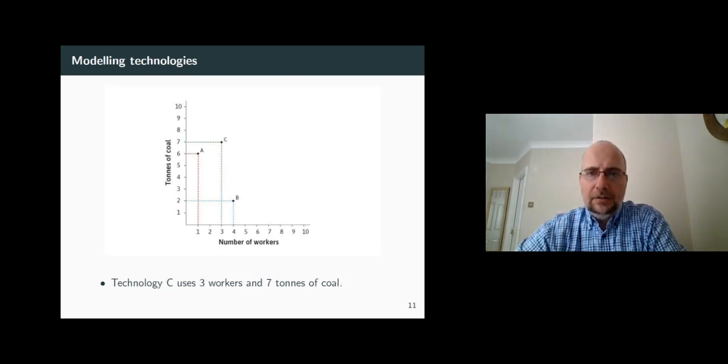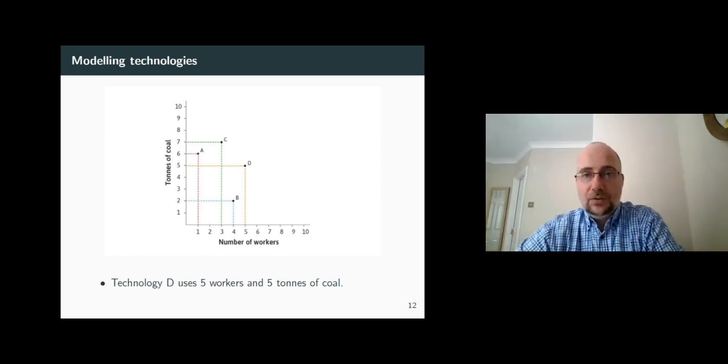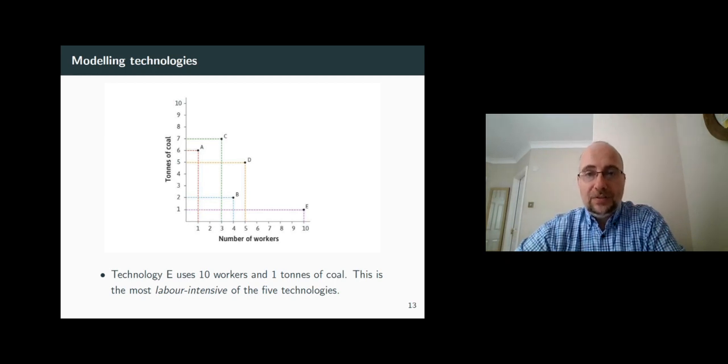You can, of course, combine your inputs in a different way and use, say, three workers and seven tons of coal, or five workers and five tons of coal, or use the most labor-intensive technology, the one using ten workers and one ton of coal. The point I want to make here is that you can combine labor and coal in a variety of ways to hit exactly the same production target, a hundred meters of cloth. So how do you choose?